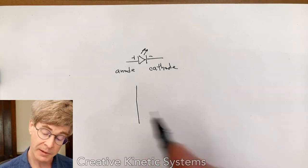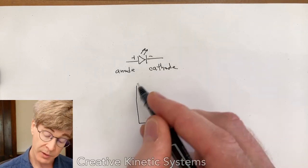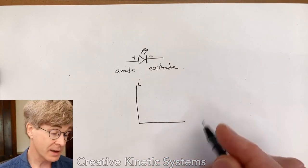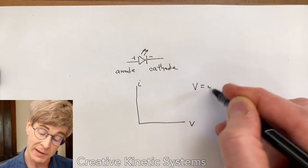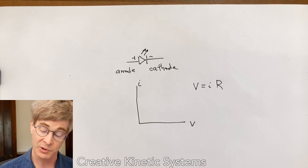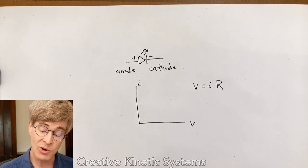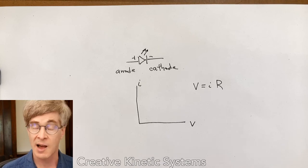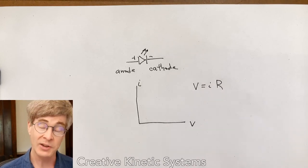I'm going to draw a tiny graph here of the current in the device as a function of the voltage on the device. Now, Ohm's law is this empirical relationship between the current and the voltage across some thing. For a linear resistor, it turns out, like a common piece of material or engineered resistor,